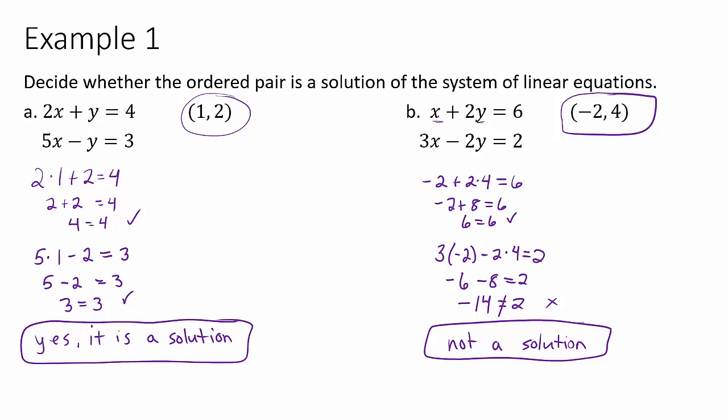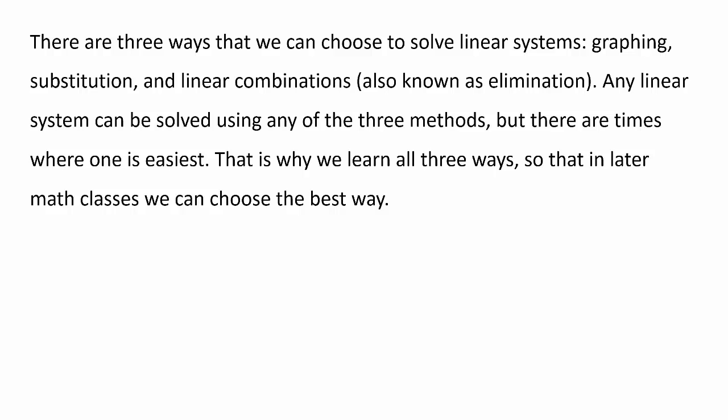Now that we've talked about basically the concept of what a solution is, it's the point where they're intersecting, or the point where two equations are equal, there's actually three different ways that we can solve these linear systems. We can solve them by graphing, substitution, and the third way has many names. One is linear combinations, one is elimination, and then I've also seen it called the addition method. And I don't know why it has so many different names. Technically, all three of those names have a way of helping us know what that method is.